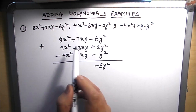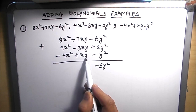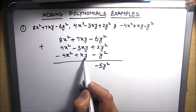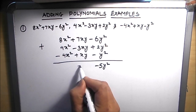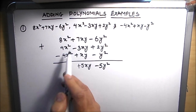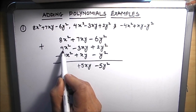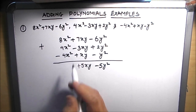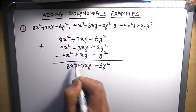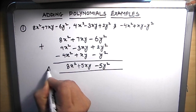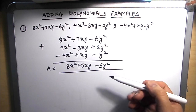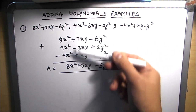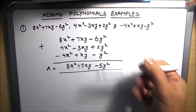For the xy terms: 7xy plus xy gives us 8xy, and 8xy minus 3xy gives plus 5xy. For the x² terms: plus 4x² and minus 4x² cancel to zero, so we are left with 8x². Our final answer is 8x² plus 5xy minus 5y². I prefer the column method of addition as we can see the terms vertically and it is easy to add them and check signs.